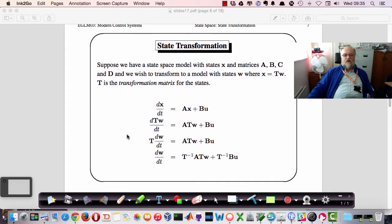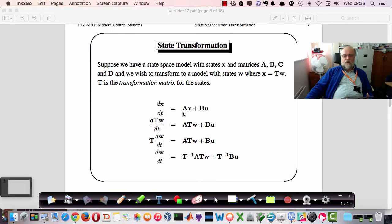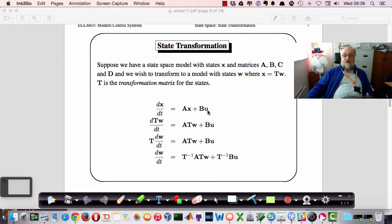So once we have the eigenvectors, then we can move on and we can start talking about system transformation. And this basically says that if we have a set of state equations, dx by dt equals Ax plus Bu, where of course the x's here are vectors as are the u's in general. If we make a simple transformation, x equals Tw, then if we substitute Tw for x in that equation, we get dTw by dt is equal to ATw plus Bu. And of course T is assumed to just be a constant matrix, a matrix of constant values, so this doesn't change the dynamics of the system essentially.